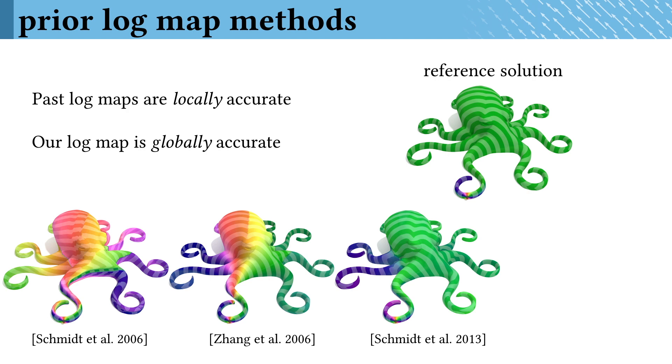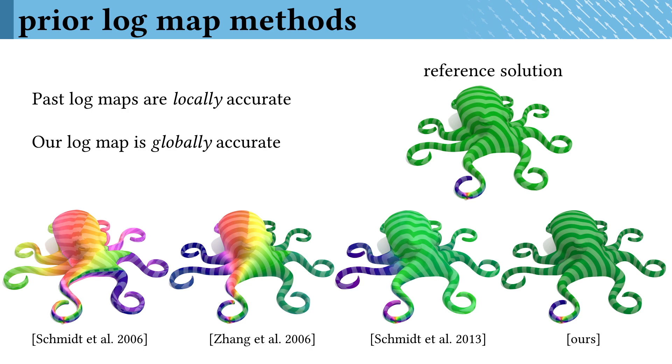In contrast, our logarithmic map is rooted in a globally accurate notion of parallel transport, so you can see that we very closely match the reference solution everywhere on the domain.